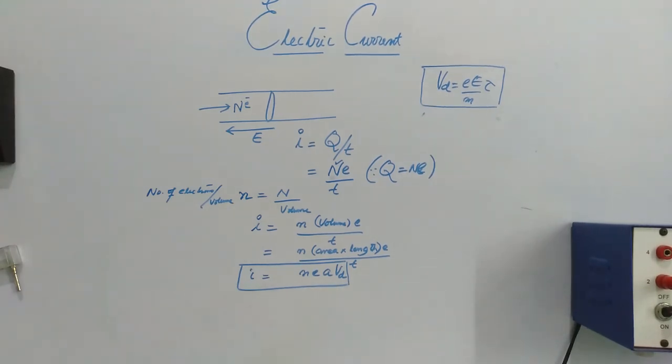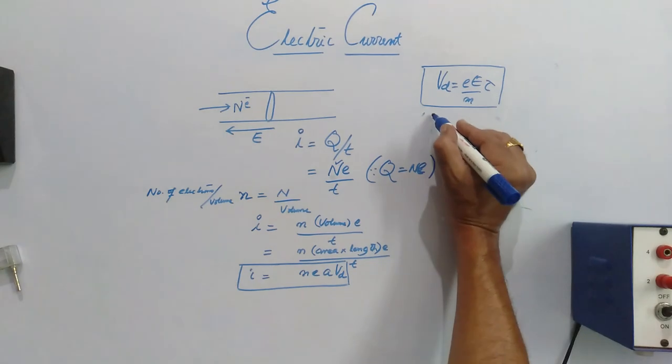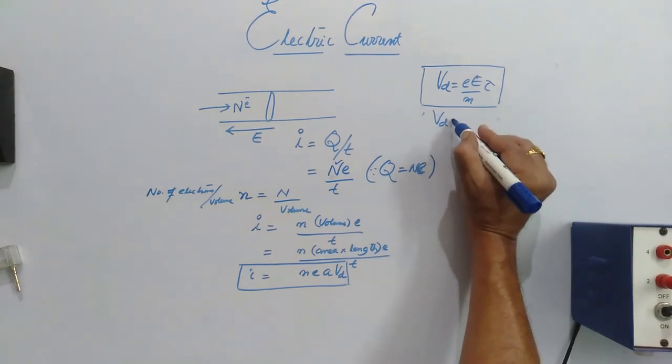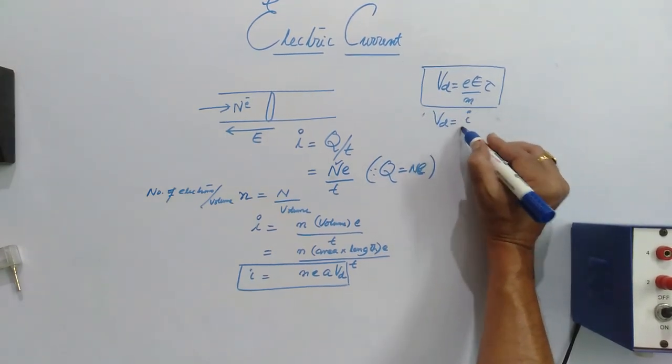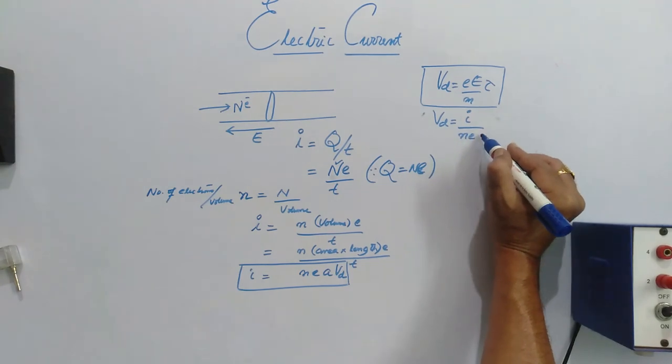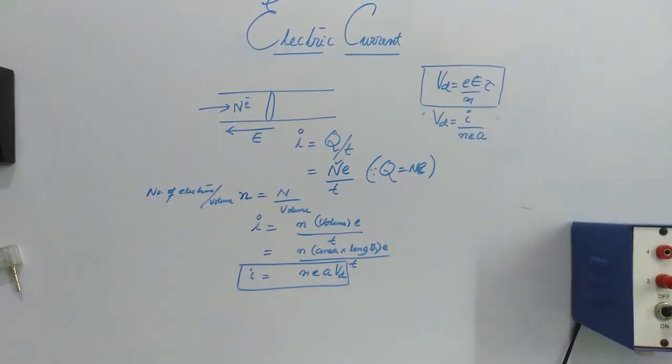I is equal to n, E, A, VD, or VD is equal to I by n, E, A. So, this is the equation which is relating the current and drift velocity. Here, n is the number of electrons per unit volume.